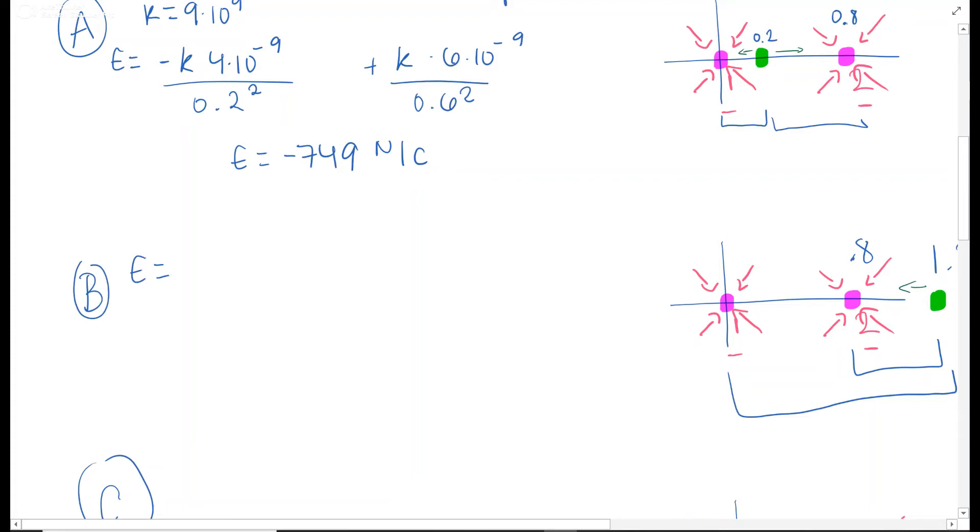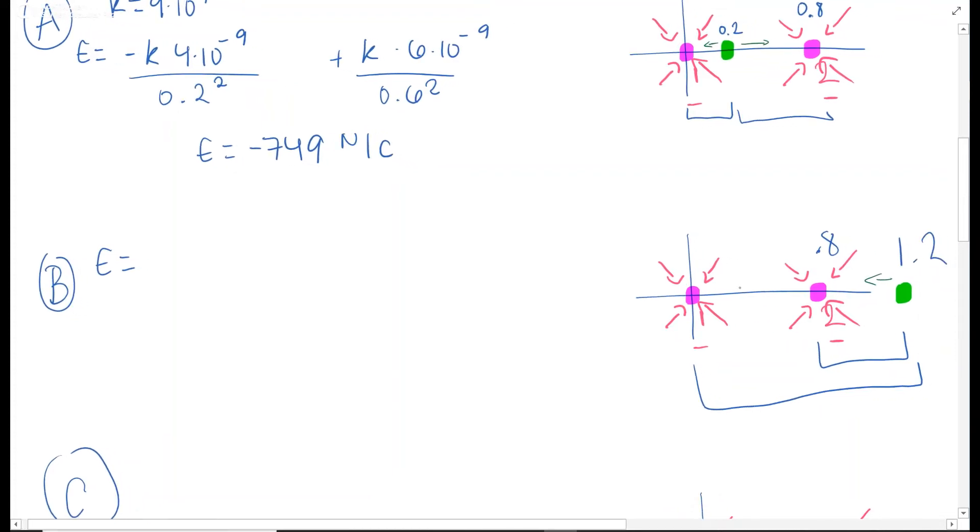E equals, so now both the negative 4 and the negative 6 are dragging them to the left. So they're both negative. Negative K times 4 times 10 to the negative 9th. And this is a distance of 1.2. And then minus K, because we are going to the left, of 6 times 10 to the negative 9th. And this one now has a distance of 0.4 squared. 362 newtons over coulombs.